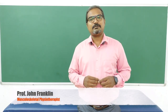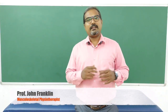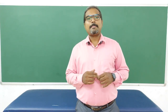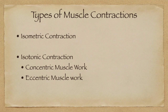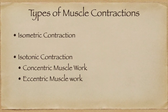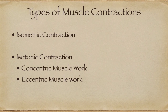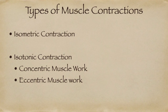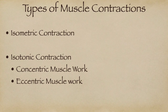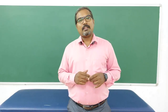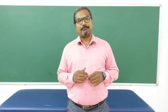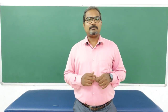Welcome to Rover Physio Test and Treat. Today we are going to learn about the types of muscle contraction and types of muscle work. There are two types of muscle contraction: the first one is isometric muscle contraction, the second one is isotonic muscle contraction. Isotonic muscle contraction is further divided into two types of muscle work: concentric muscle work and eccentric muscle work.